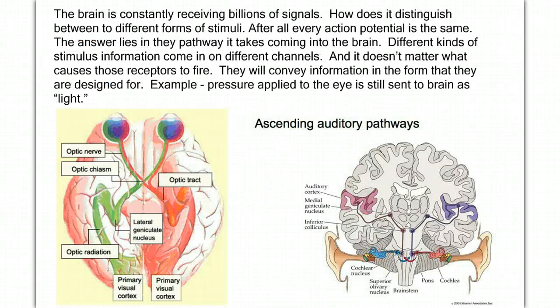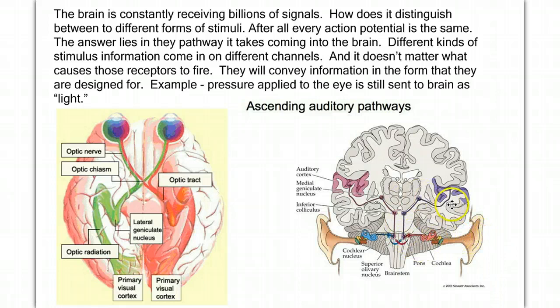So how does the brain understand this difference? The answer lies in the route that that information takes to the brain. For example, information from your eyes travels through a very specific pathway and ends up in the primary visual cortex and is interpreted as light and color. It's never interpreted as sound. Whereas information through your auditory cortex comes in through your ears and is routed to the part of the brain that's interpreted as sound.